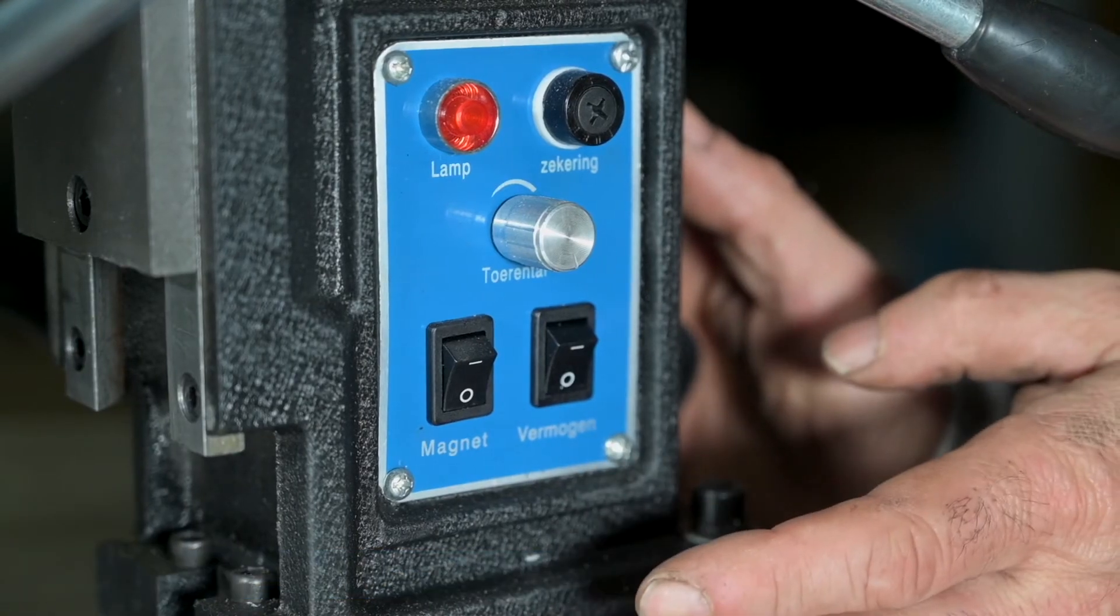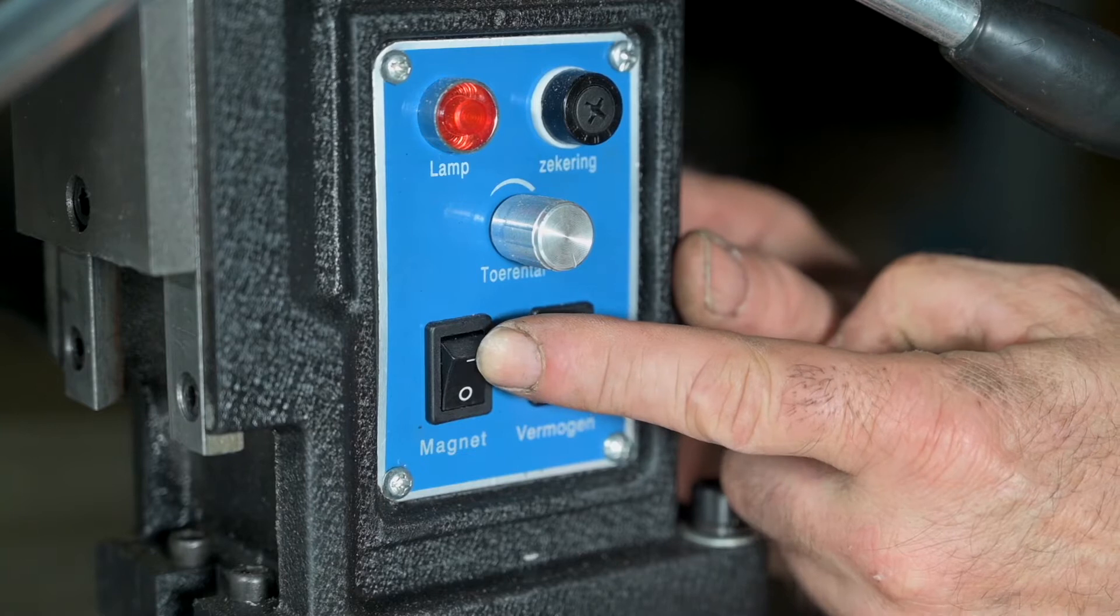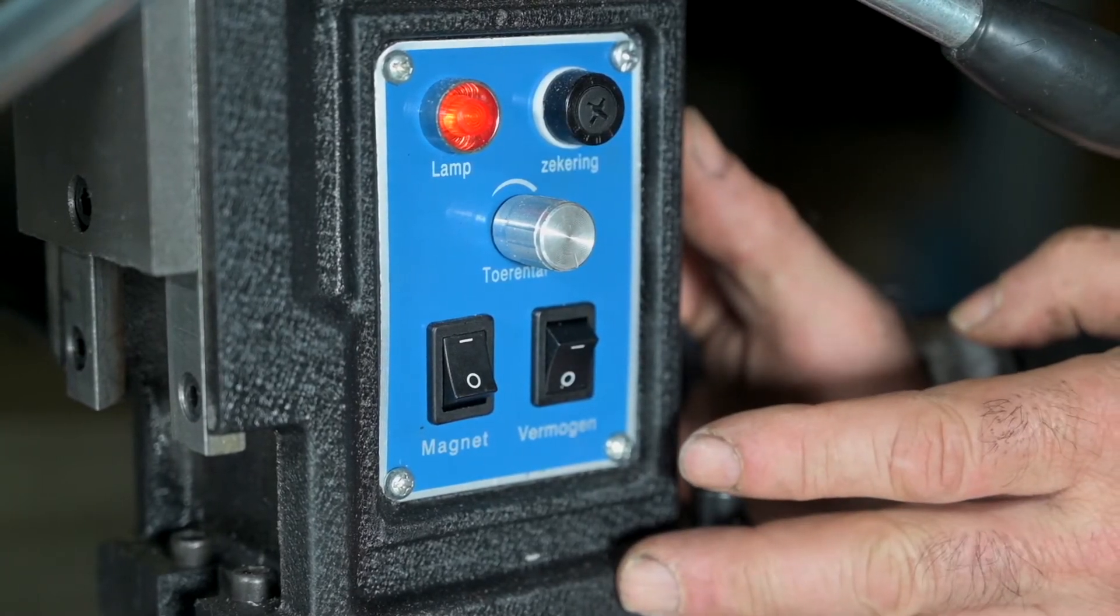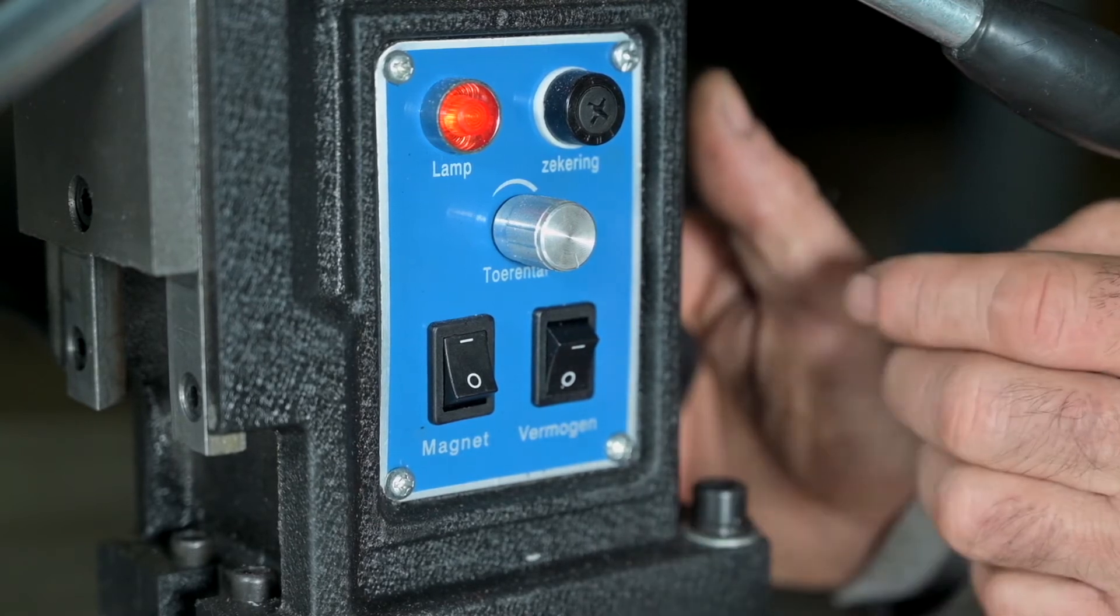This drill does not have a lot of controls. The magnet is engaged by this switch and then the lamp will come on. So now the magnet is locked to the metal beam or the metal plate which it's resting on.